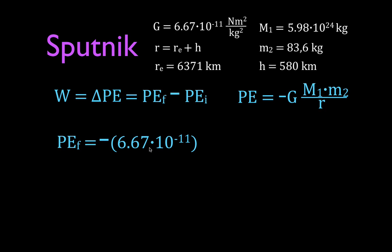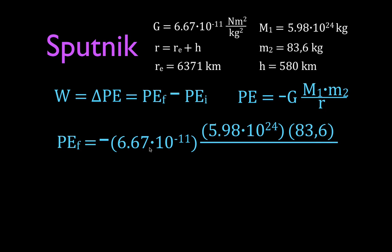I'm going to calculate the final potential energy first. PE final equals negative G times the mass of the Earth times the mass of Sputnik, divided by r. For the orbital position, r is 6,371 plus 580 equals 6,951 kilometers. Don't forget: the gravitational constant uses units of newton meters squared per kilograms squared, so the masses must be in kilograms and the distance must be in meters — so we multiply 6,951 by 10 to the third to convert to meters.